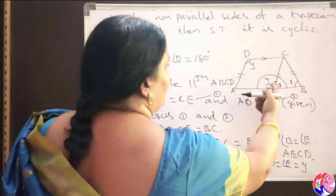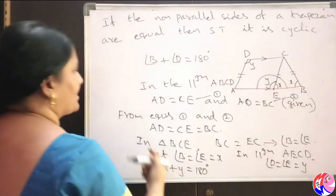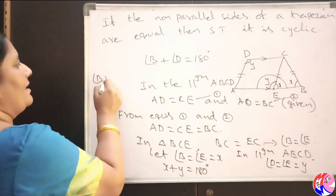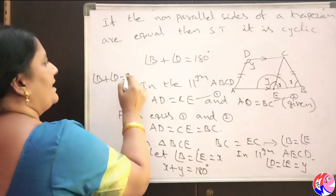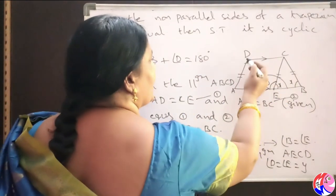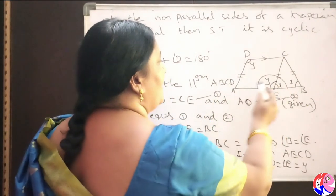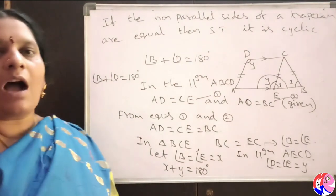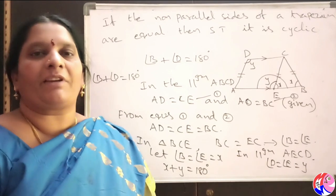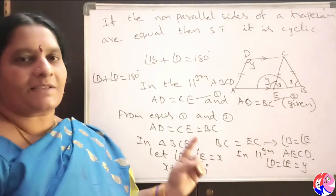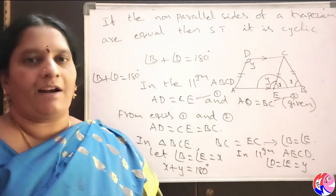In place of X we can take angle B, and in place of Y we can take angle D, giving us angle B plus angle D equals 180 degrees. In quadrilateral ABCD, opposite angles are supplementary. We know that if opposite angles of a quadrilateral are supplementary, then it is cyclic. Therefore ABCD is a cyclic quadrilateral.